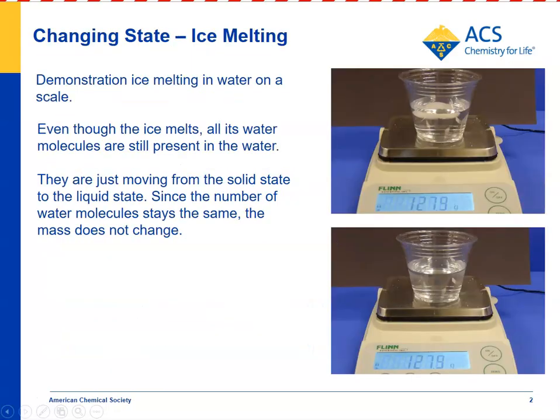First, you'll do a demonstration where you'll put ice and water and show students the total mass of the ice, water, and the cup. Here, it's 127.9 grams. Then, you can either leave the cup on the scale or take it off, let the ice melt, and then recheck the mass — and here you can see that it's still 127.9 grams.